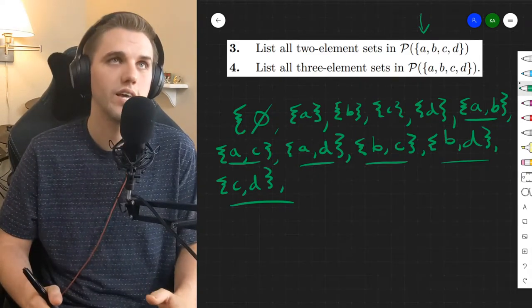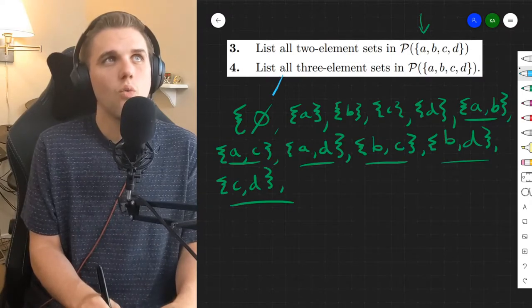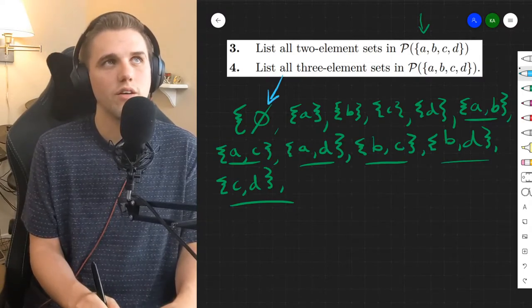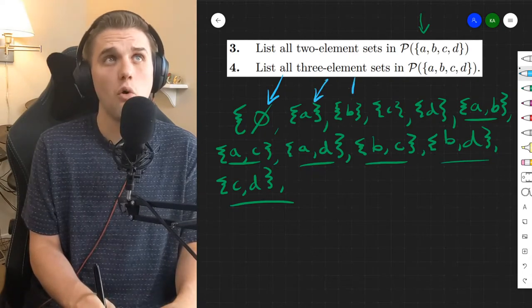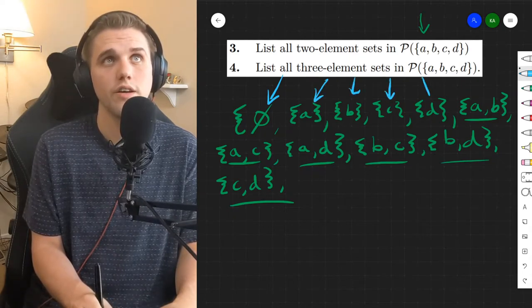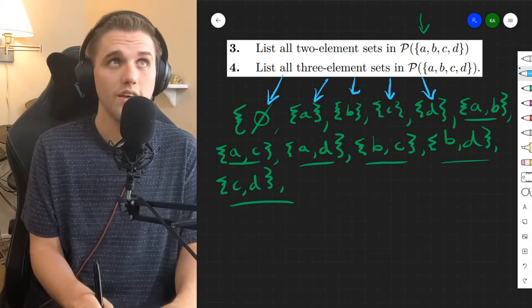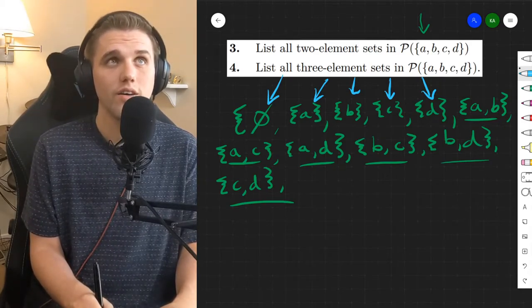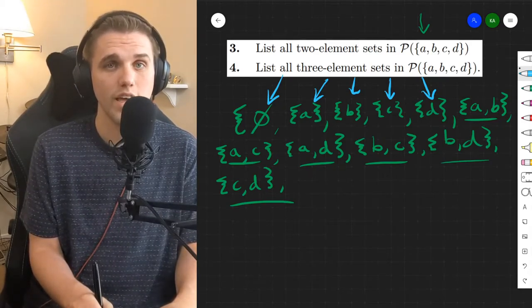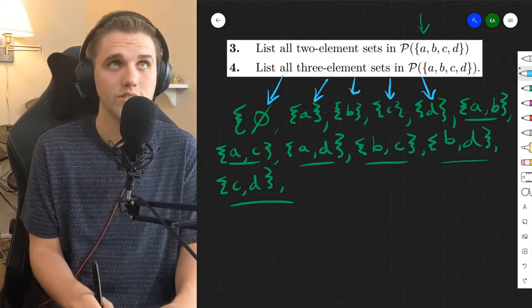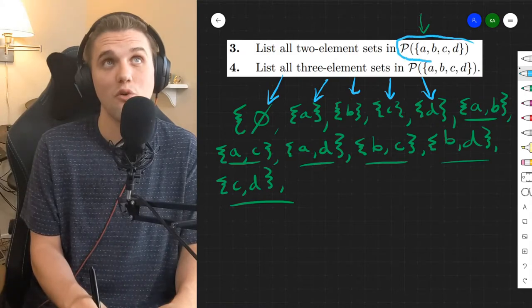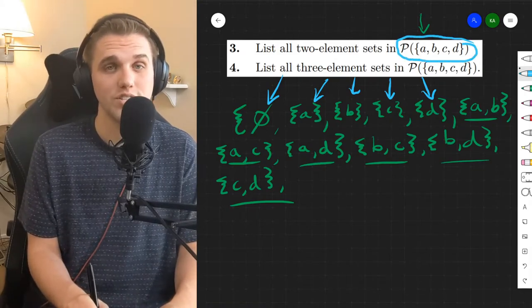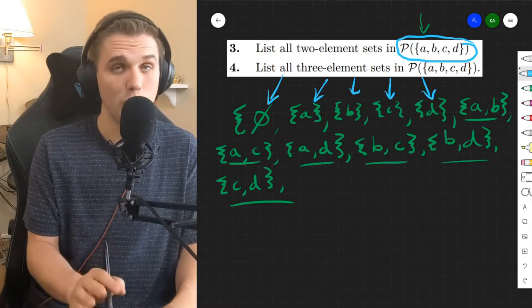But why is it six? So I have a question for you all. Why is there an element here that is a set with zero elements? Why are there four sets here, or subsets I should say, that are singleton sets, meaning that they only have one element in those sets? Why four? That's an oddly specific number. Well, it just so happens that there are four elements in my original set. Keep that in mind. That's important.